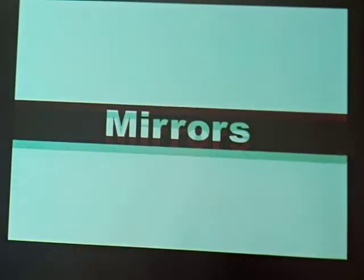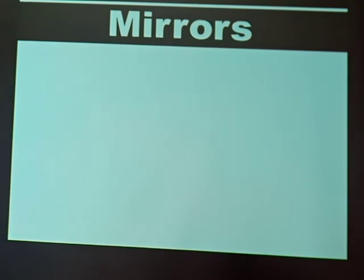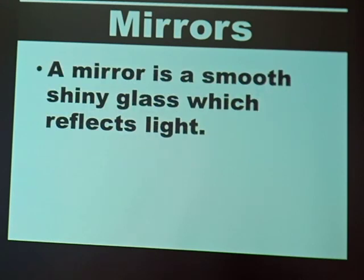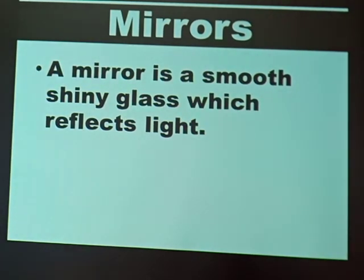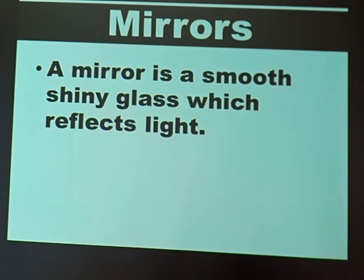Now, we would like to look at mirrors in detail. What do we mean by a mirror? If you look at the mirror you have at home, you will be able to tell me that a mirror is smooth, shiny, and made of glass. Therefore, a mirror is a smooth, shiny glass which reflects light.